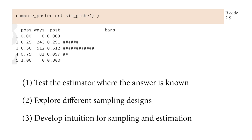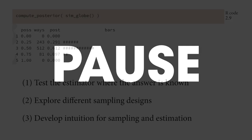You can explore different sampling designs this way. For example, if you wanted the answer within a certain precision — a certain confidence about the range of plausible values for the proportion of water — you could determine from this simulation how many globe tosses you'd need. Every time you simulate from a generative model and study its properties with a programmed estimator, you develop more intuition for how sampling and estimation work — intuition that carries across projects and grows throughout your career.